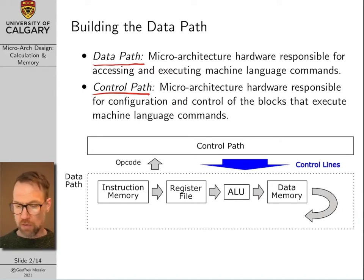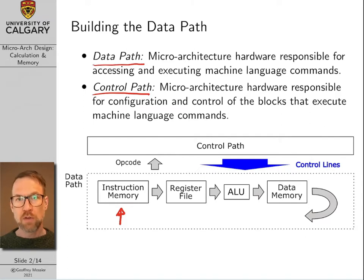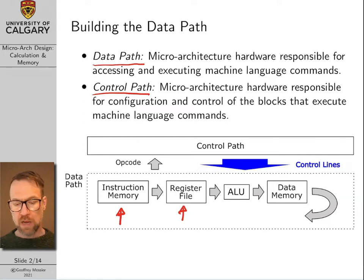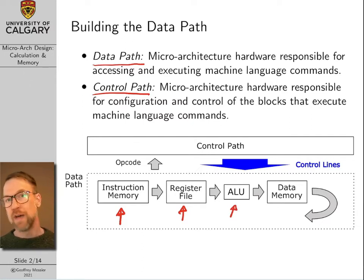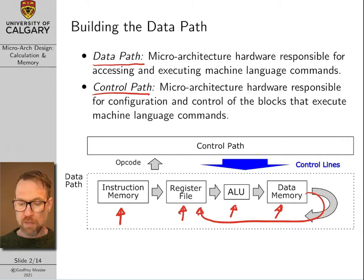You can think of the control path as controlling the blocks that make up the data path, and I've tried to show that in a high-level way in this slide. Up until now, we've been talking pretty much exclusively about the data path. We've presented a design for instruction memory that includes a program counter that reads out machine language instructions from instruction memory sequentially. We've talked about the design of a high-speed area of memory called the register file, and instruction memory then flows into the register file and also the ALU.